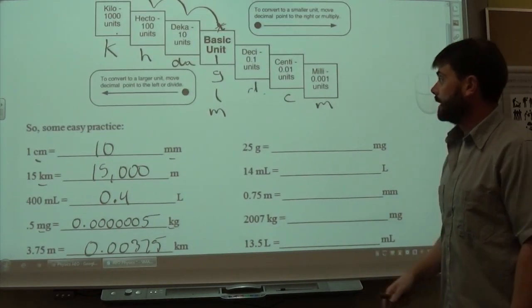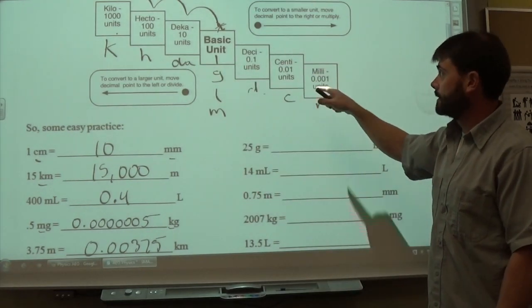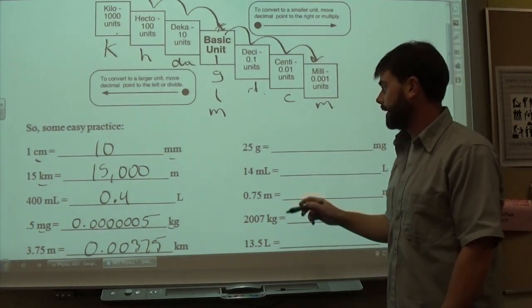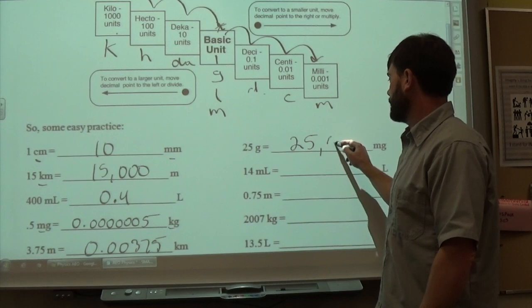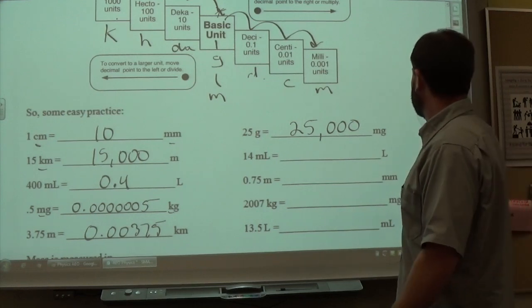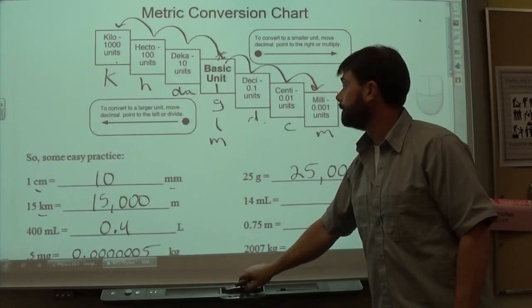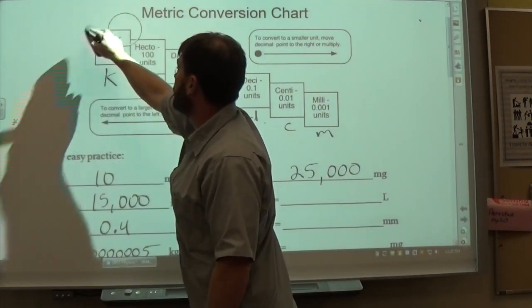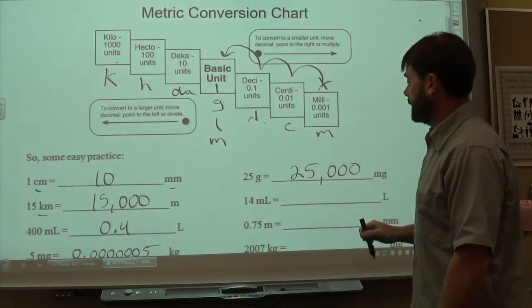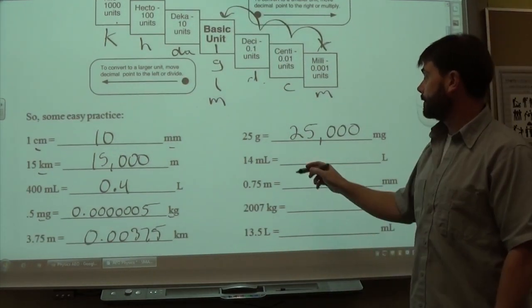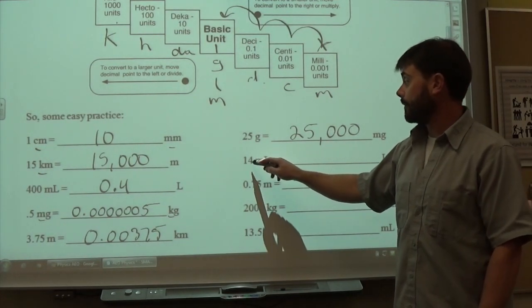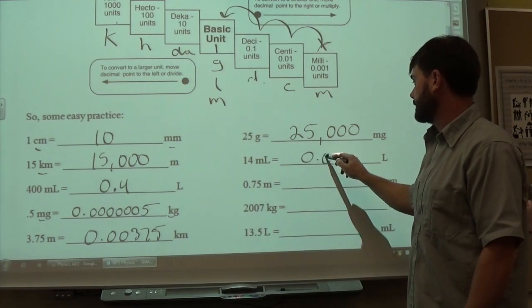For grams to milligrams, we start at the base and go to milli — 3 steps to the right, the same as multiplying by 1,000. So 25 grams becomes 25,000 milligrams. Then 14 milliliters to liters: milli is at the bottom and the base is 3 steps to the left. Starting after the 4, move the decimal back 3 places to get 0.014 liters.